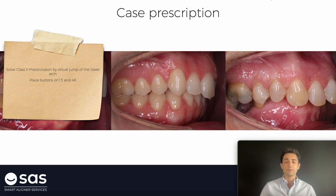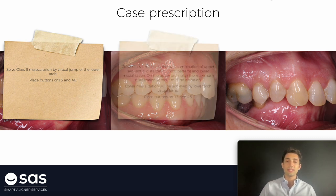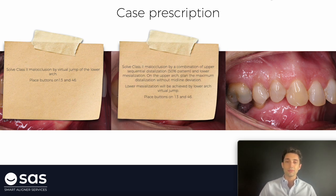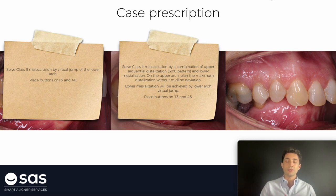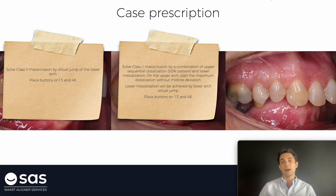In the second case, we have a full class 2 that is going to be treated with a combination of upper sequential distalization. I am explaining what type of pattern I want to apply in that case, and I am also writing the limit of the distalization of the upper arch. I don't want to move the upper midline to the right in this case, because here we have an asymmetric class 2 — class 1 on the left, class 2 on the right. So if upper midline is centered from the beginning and we plan a lot of distalization on one side, we are going to move upper midline to that side. So we are going to combine upper distalization with lower mesialization.